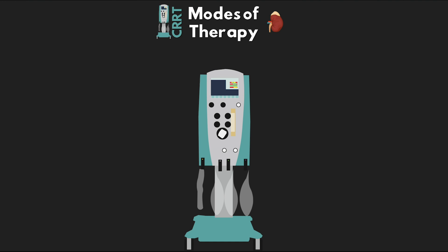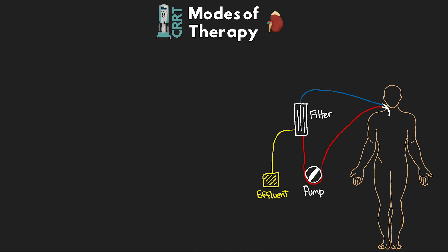There are several different types of therapy that we can offer with CRRT, and much of it's going to depend on what the patient needs as well as provider preference on how they want to run it. The therapy we can offer really consists of various applications of either hemofiltration, hemodialysis, or a combination of both principles. As we talk about these different modes, I'm going to add them to this chart so you can really see where they fall.